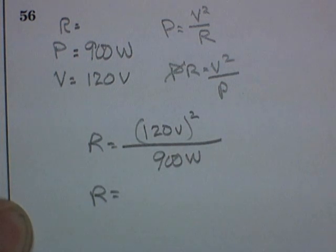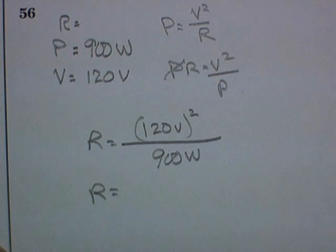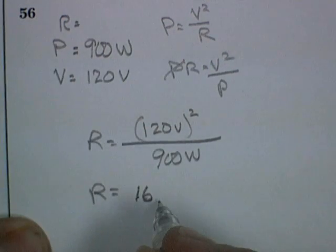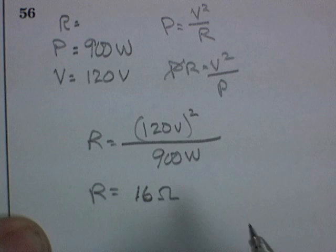And get our calculator out. Don't forget to square that 120. And I'm coming up with 16. The unit of resistance is ohms. So I use the letter omega. And that should be my resistance.